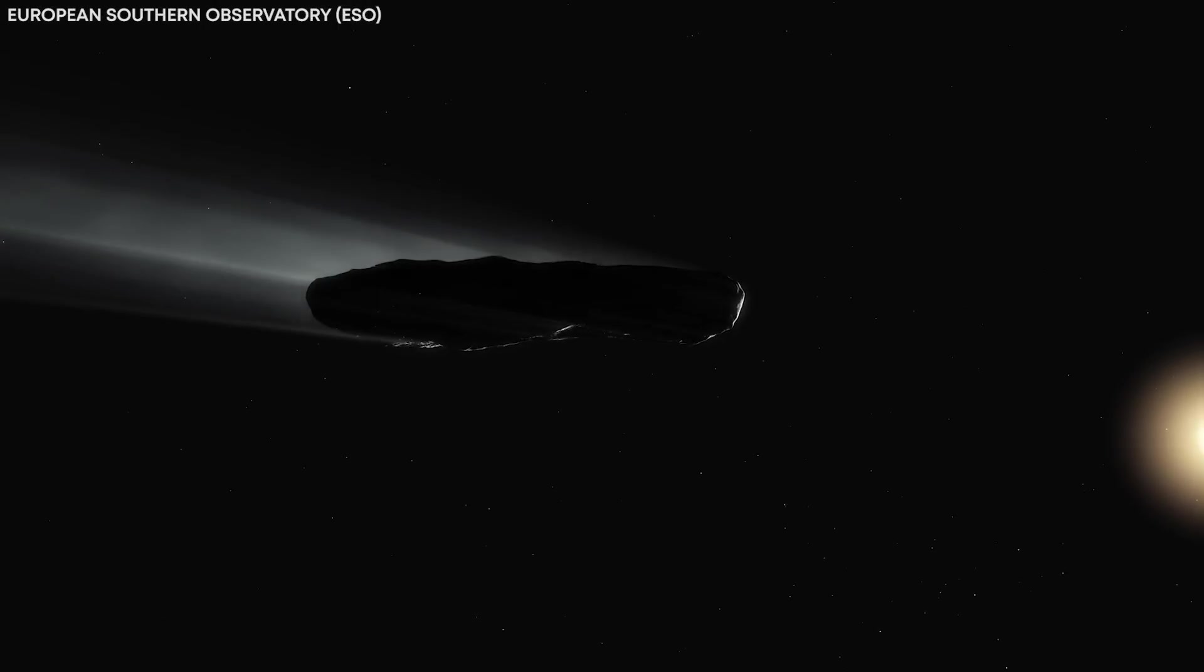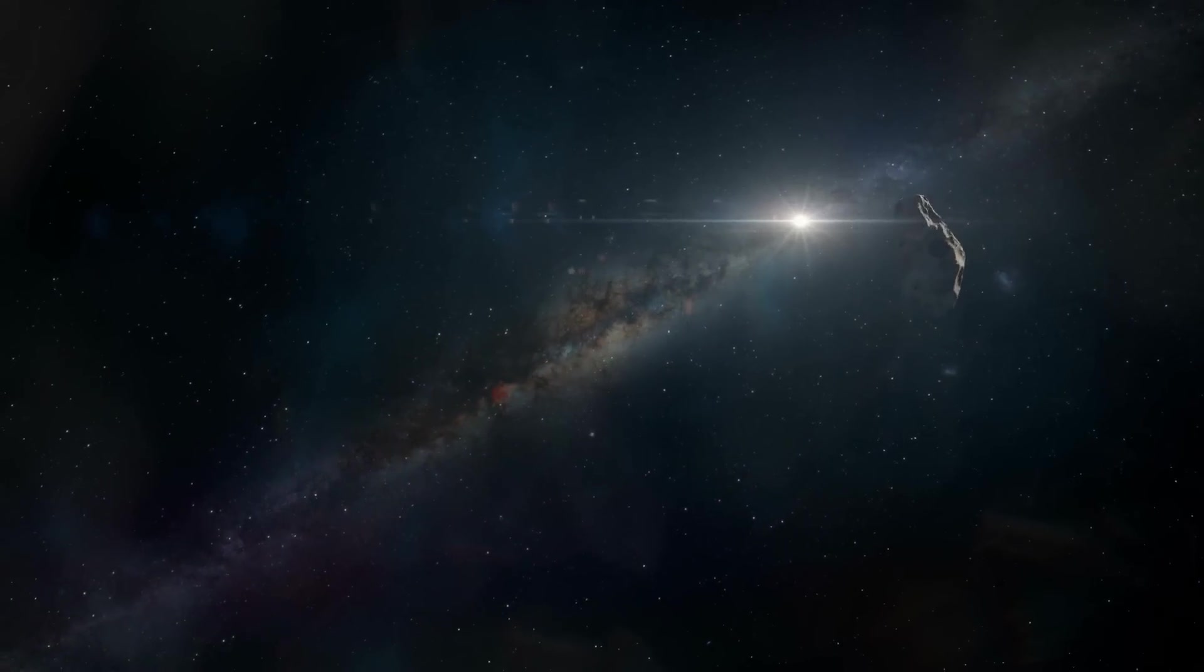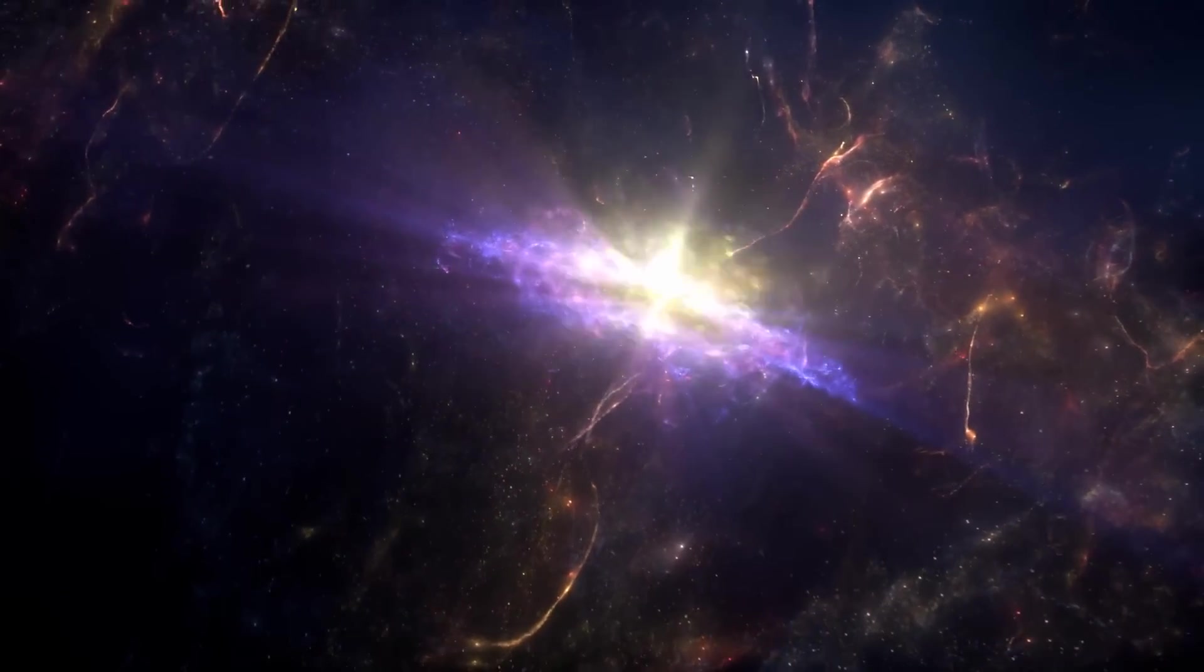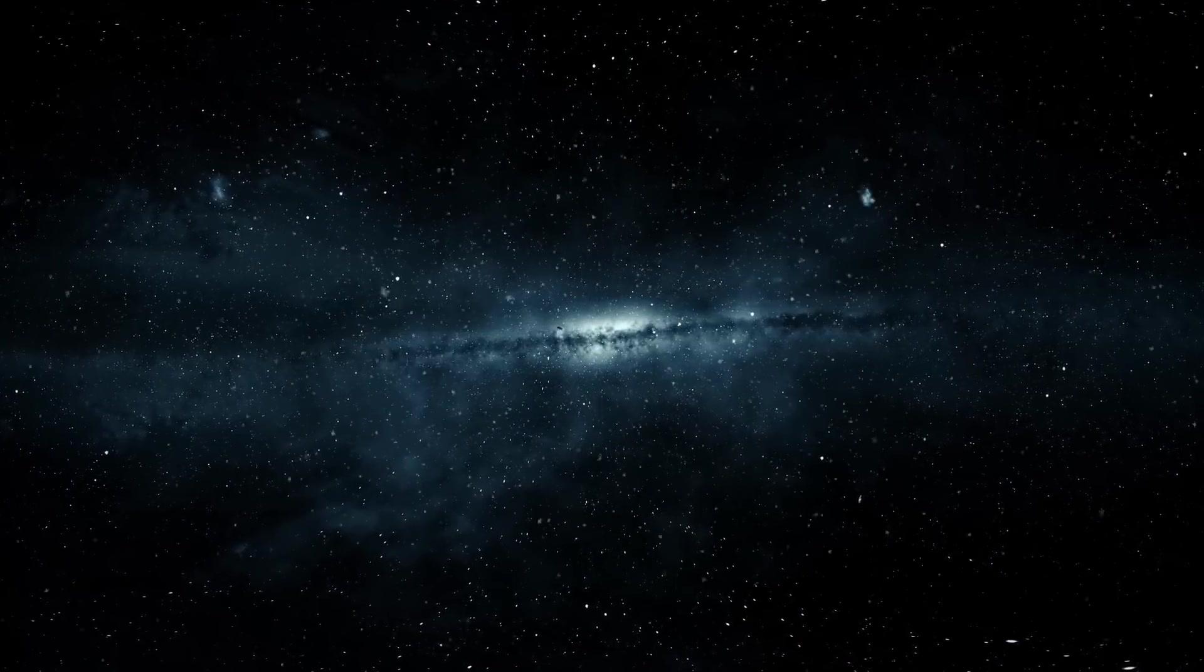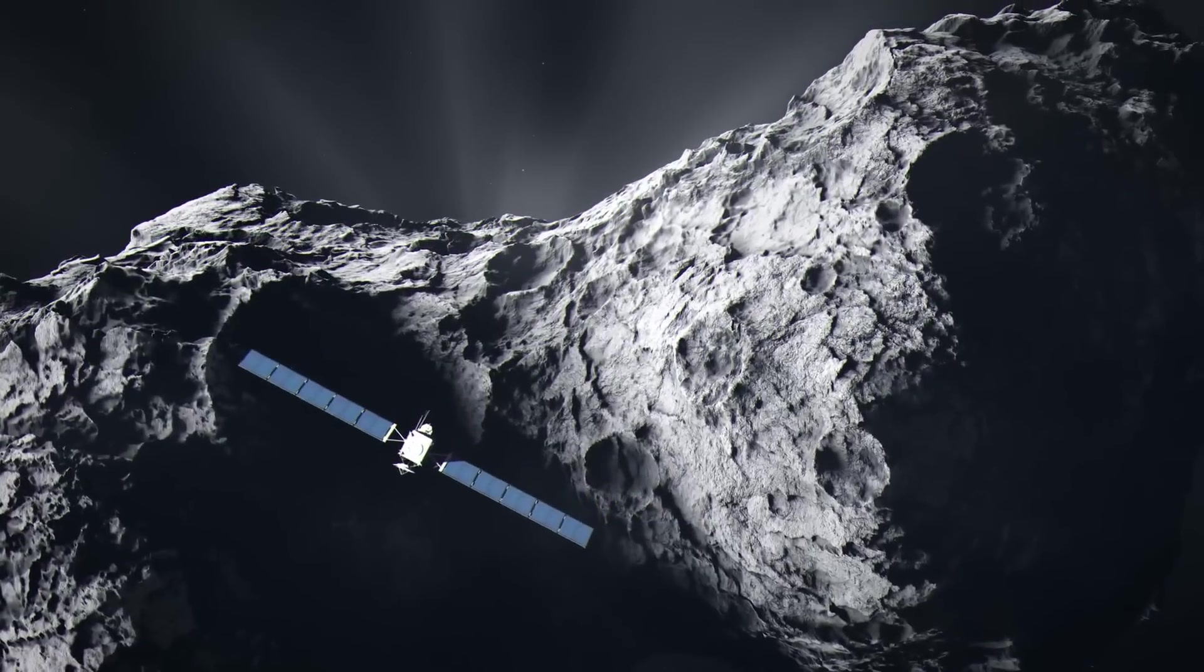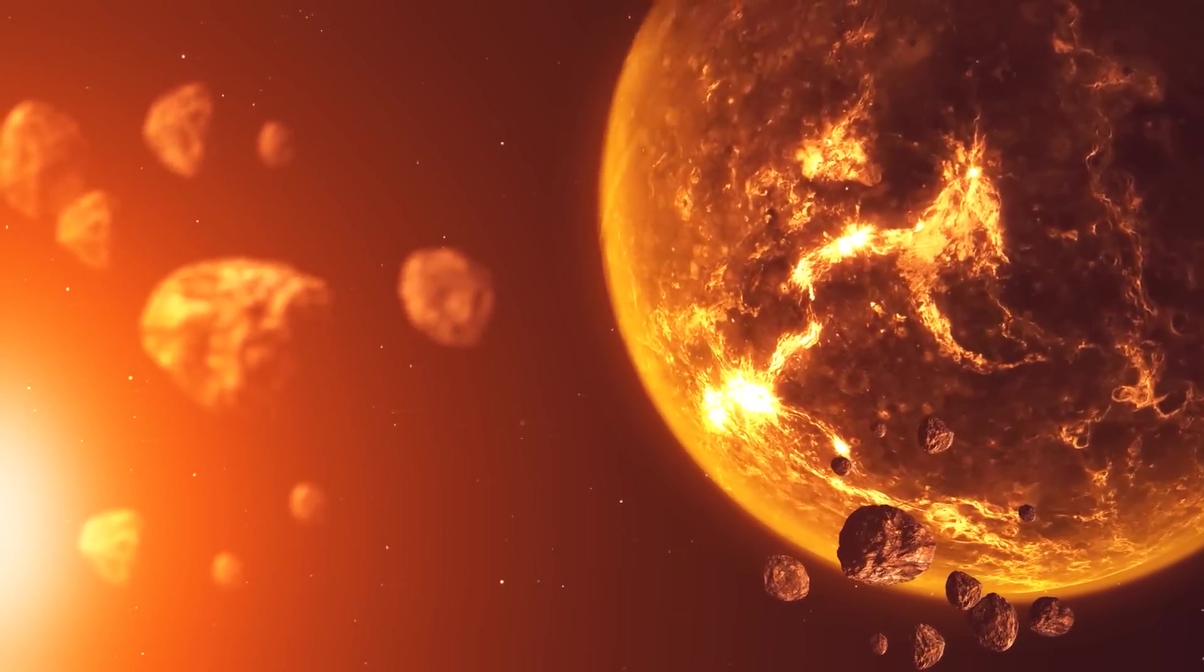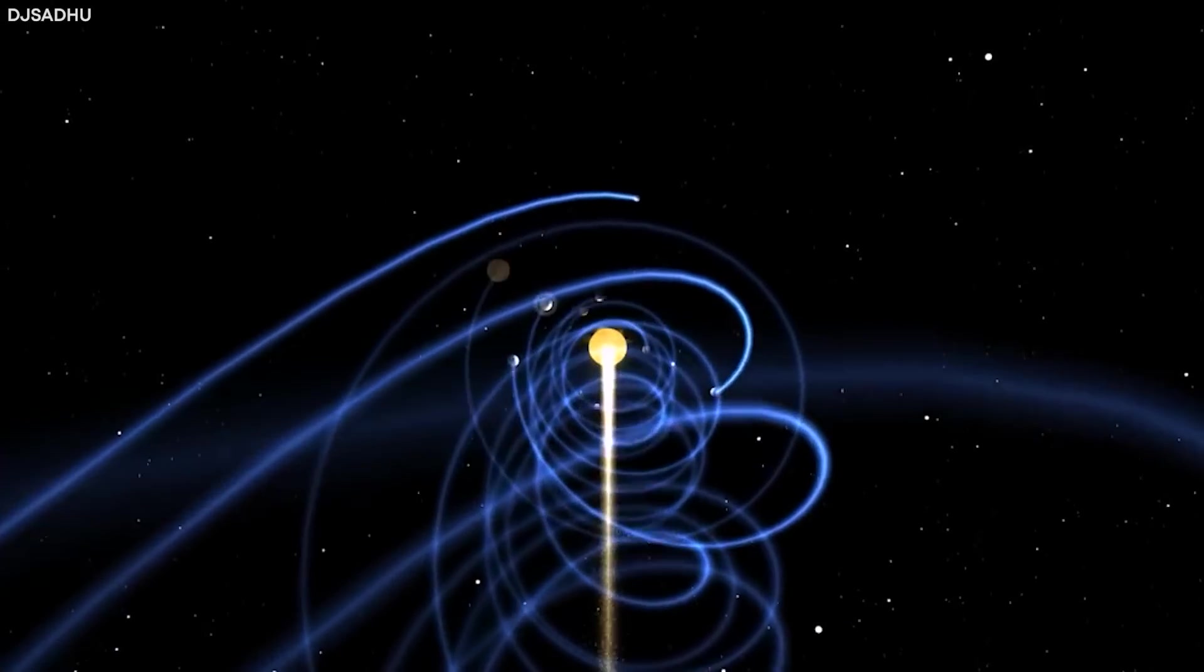Comets are icy bodies that develop tails as they approach the Sun. This tail is known as a coma, a visible cloud of dust and gas that surrounds the comet's nucleus as they approach the Sun. This coma is formed due to the sublimation of volatile materials from the comet's surface. Now, this is what majorly differentiates the Oumuamua from a comet. No visible coma was observed despite its proximity to the Sun during its passage through the solar system.